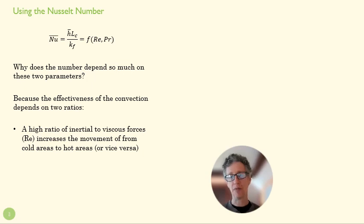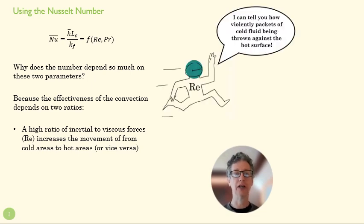One is the ratio of inertial forces to viscous forces. In other words, how much things are moving, masses moving, versus how much resistance there is to that movement. And if you have a high ratio of inertial to viscous forces, your flow is going to be violent, right? It's going to be moving fluids around very quickly from space to space, and that is going to increase the effectiveness of convection. And so we can think of convection as throwing those packets of fluid against a hot surface if it's a cold fluid. And the Reynolds number tells us how violently that's actually happening.